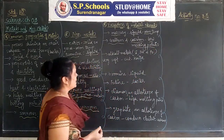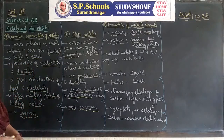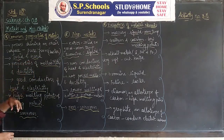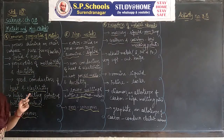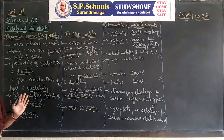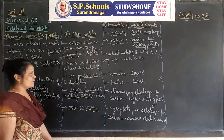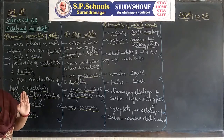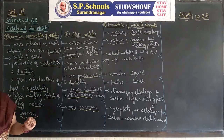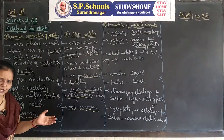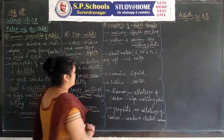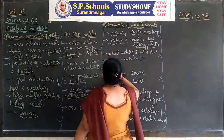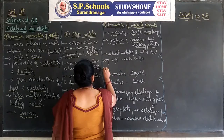Metals are generally solid and hard, but alkali metals like lithium, sodium, and potassium are very soft — we can cut them with a knife — while other metals cannot be cut easily. These are the exceptions of non-metallic elements.